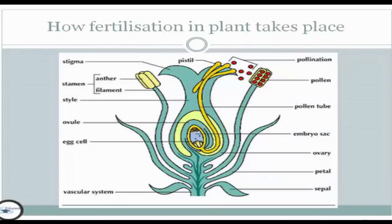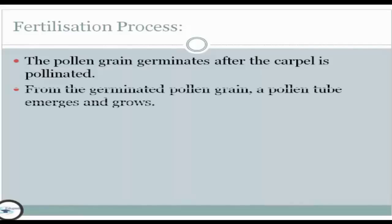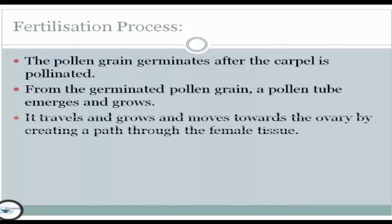So how does fertilization in plants take place? As we can see in the image, first the pollen grain germinates after the carpel is pollinated. From the germinated pollen grain, a pollen tube emerges and grows, traveling toward the ovary by creating a path through the female tissue.